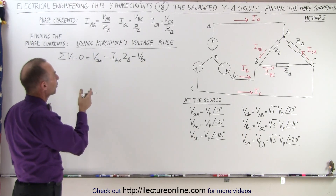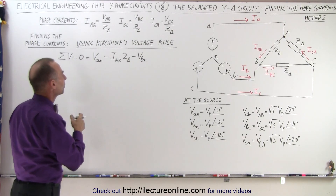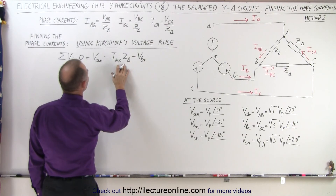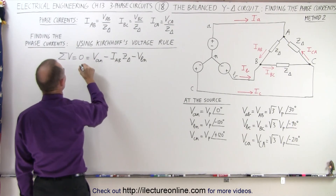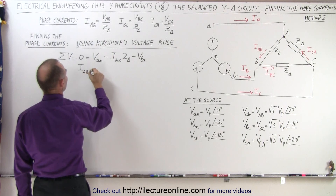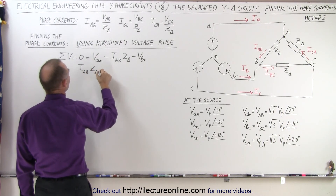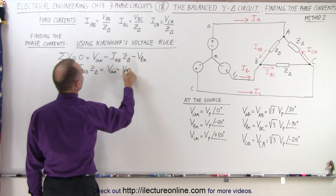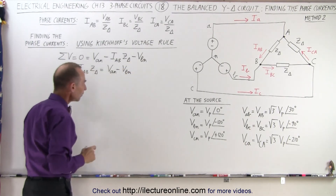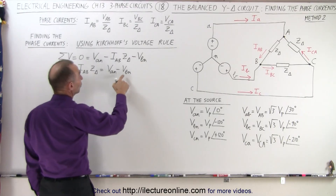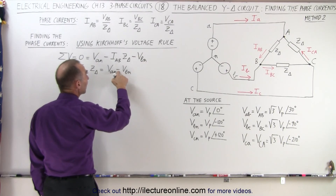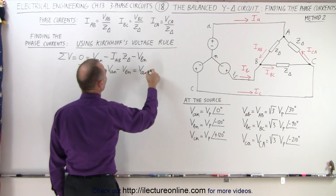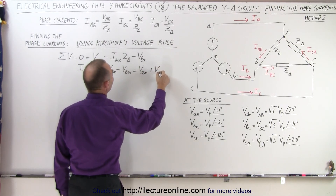So what we need to do now is solve that for IAB. We bring terms over to the left side, so we end up with IAB times Z delta is equal to VAN minus VBN. We can rewrite minus VBN as plus VNB, so this is equal to VAN plus VNB.